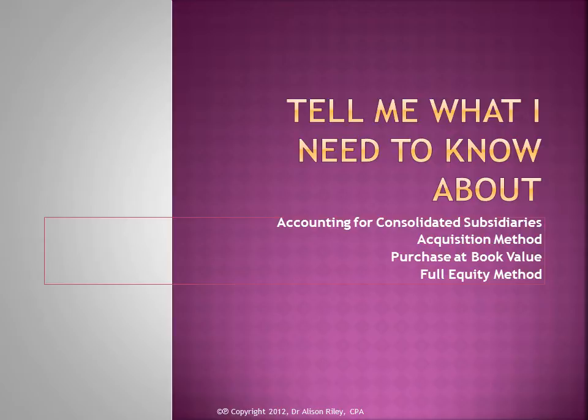Accountants need to be familiar with all three of these methods because combinations that were effected prior to these dates are permitted to continue to consolidate their financial statements using these methods. To keep the example simple, it's assumed that the parent acquired 100% of the subsidiary's outstanding equity for cash equal to the subsidiary's book value. It's also assumed that the parent company will account for the subsidiary using the equity method. The example illustrates the case of a company with only one controlled investee.